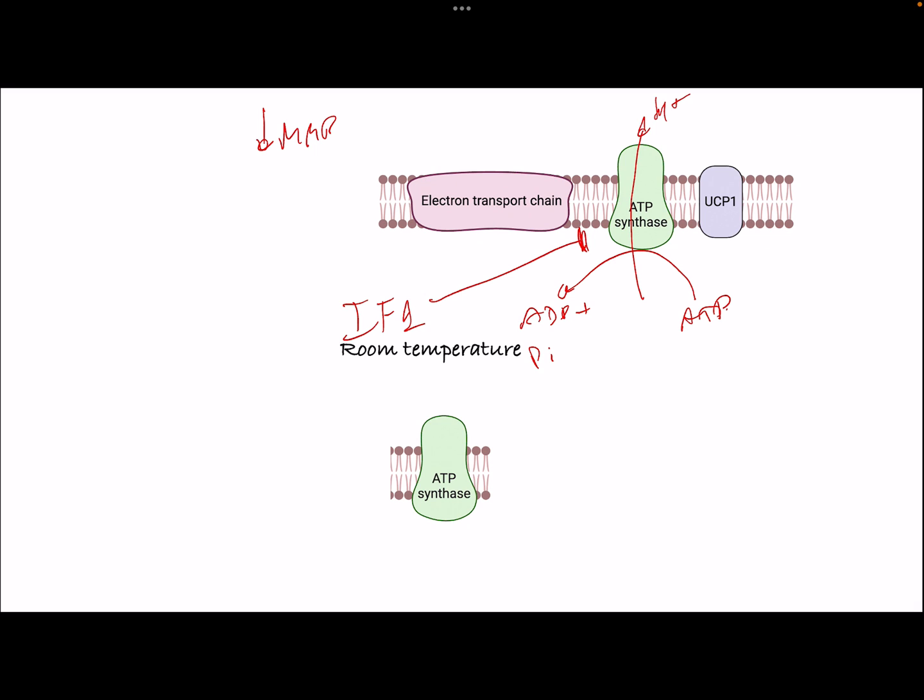We found in this study that at room temperature, brown adipocytes express high levels of IF1, and these high levels of IF1 block ATP synthase hydrolytic activity. However, in cold-adapted mice, IF1 levels are downregulated, allowing greater ATP synthase hydrolytic activity when UCP1 activity is higher.